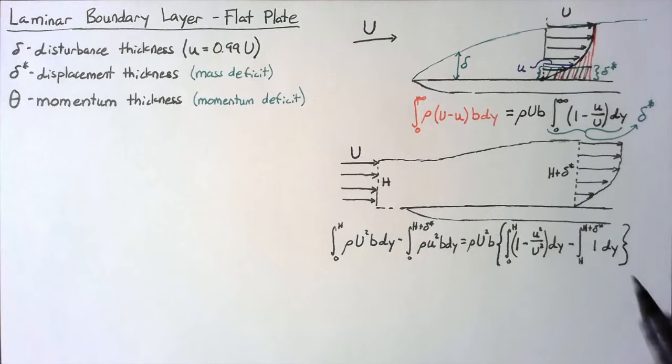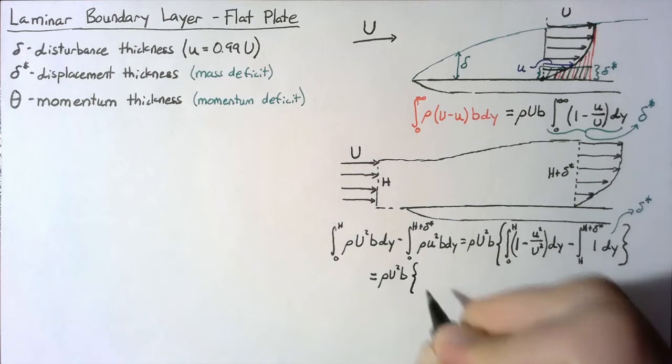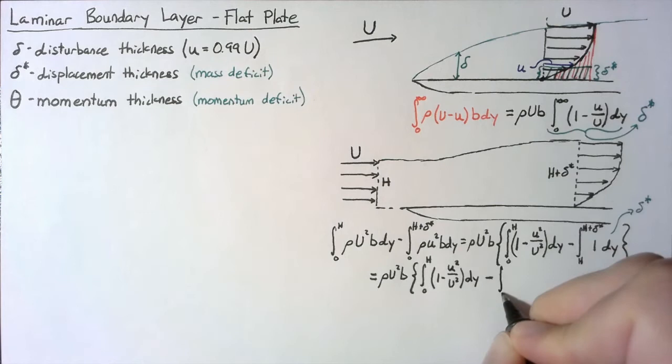For this piece right here, we actually end up with just h plus delta star minus h, or just delta star. Let's rewrite this. This entire thing is going to be equal to rho U² b multiplied by these two integrals — so the first integral we can just copy directly, and the second one was equal to delta star.